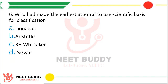Question 6: Who had made the earliest attempt to use scientific basis for classification? Option A Linnaeus, option B Aristotle, option C R.H. Whittaker, or option D Darwin. The correct answer is option B, Aristotle.